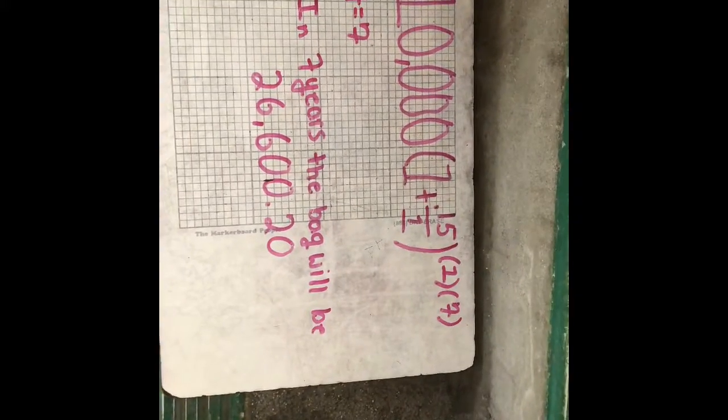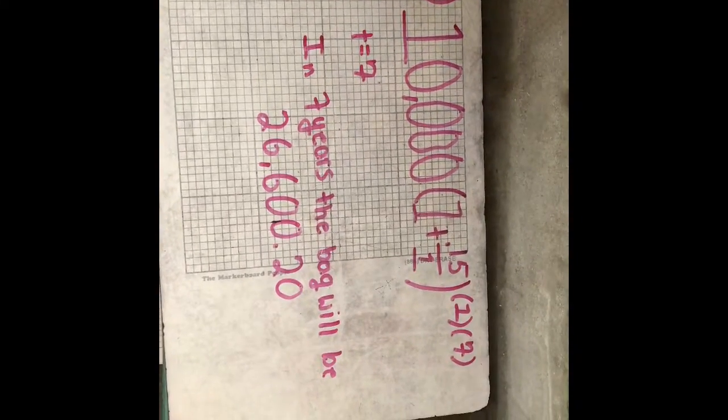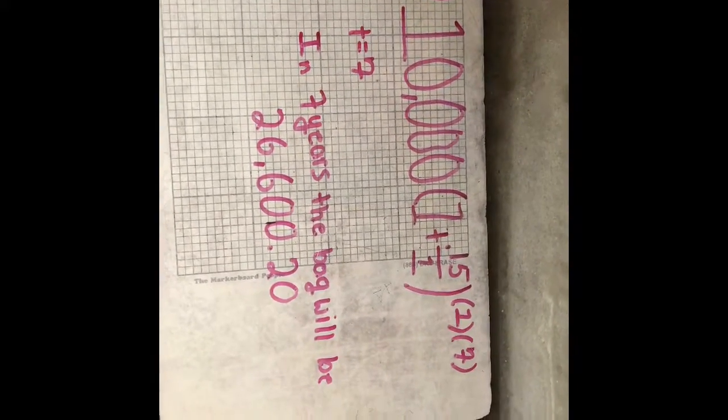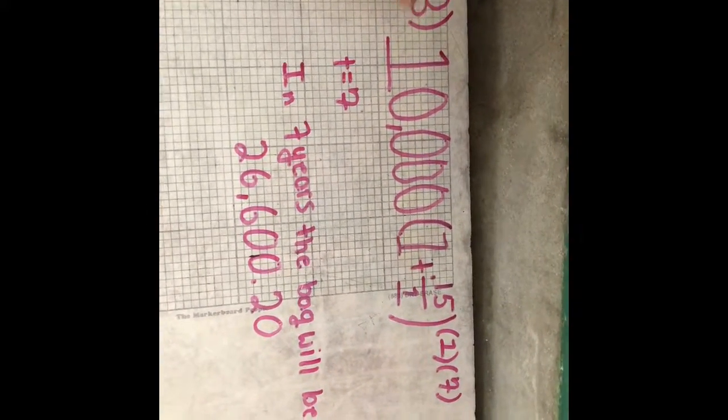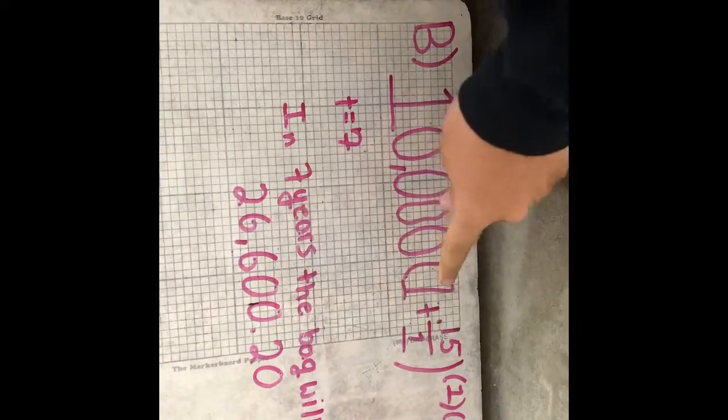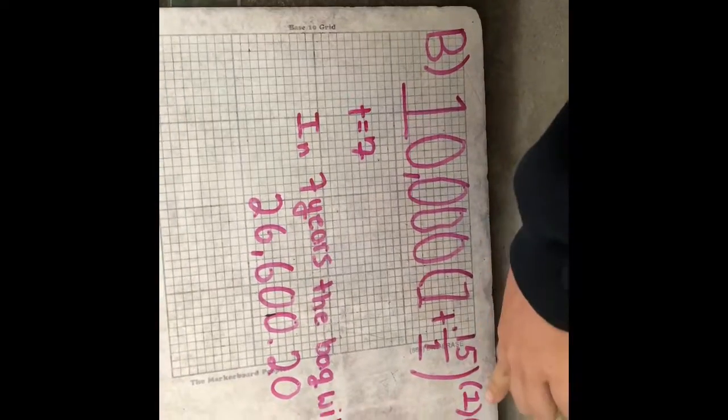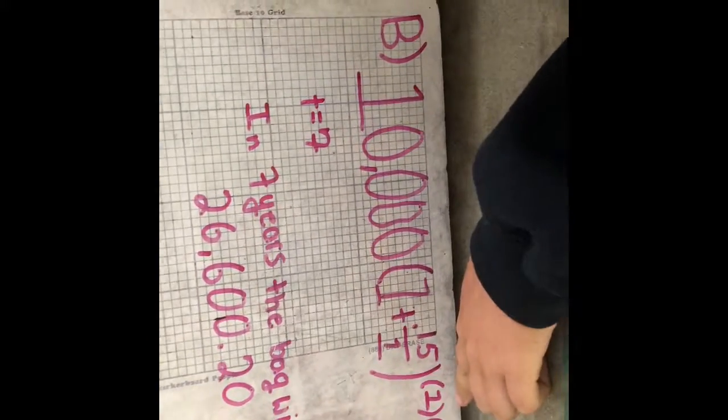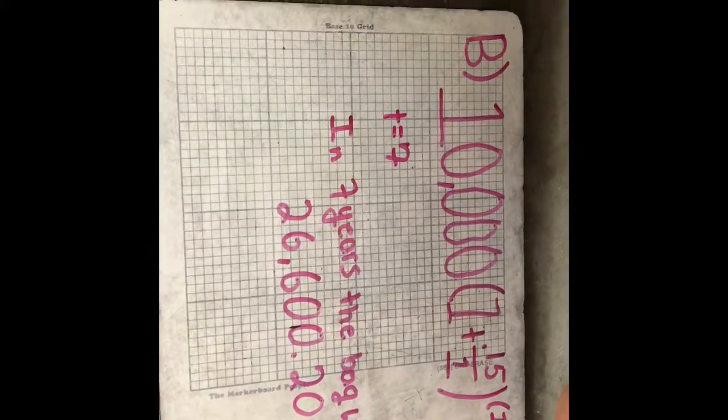So part B is asking you how much it'll cost in seven years, so that means it's going up, so then you'll have 10,000 because that equals a and you'll plug it into your original equation. So 10,000(1 + 0.15/1)^(1×7) because 7 is how many years it'll be.